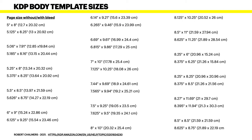KDP body template sizes show as follows. You've got the page size without bleed and the page size with bleed. For example, 5 by 8 is without bleed and 5.125 by 8.25 is with bleed. In Affinity Publisher we can only export to PDF for publishing, and KDP happily accepts PDF files — but you must have the bleed in your document. If you submit without bleed you'll end up with all sorts of problems and they'll reject it. So just take it as read: use the bleed, and you can pick all sorts of sizes for all sorts of books.